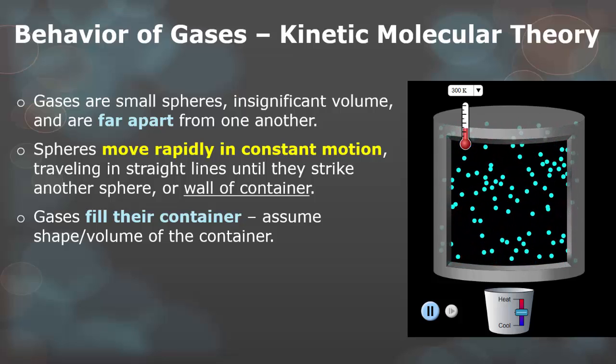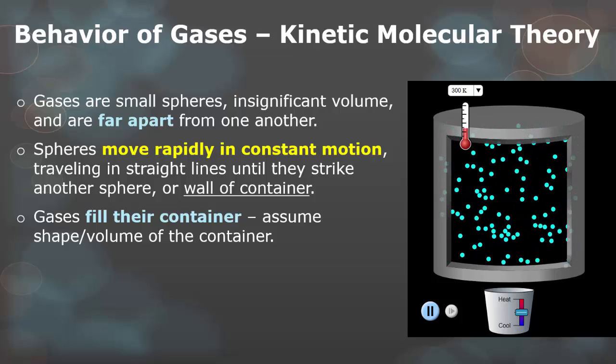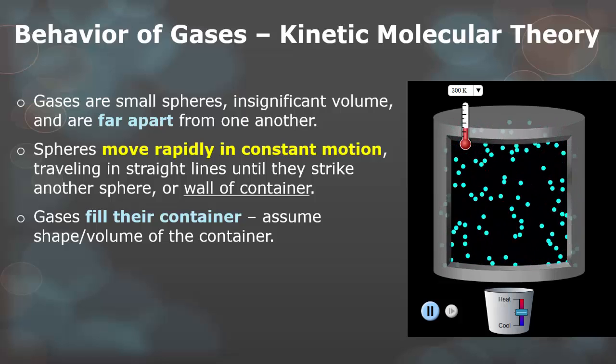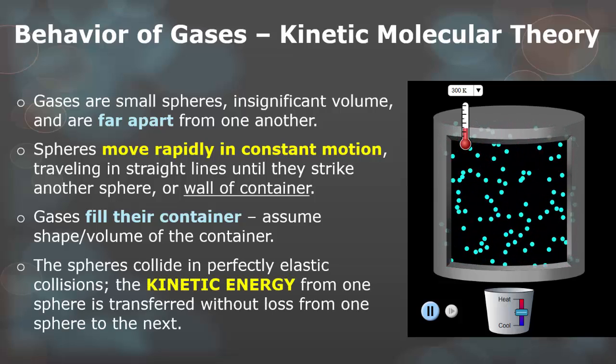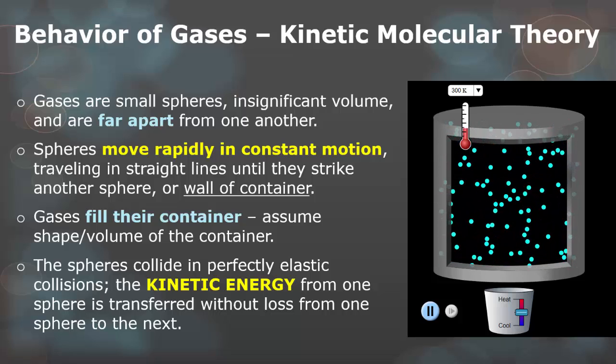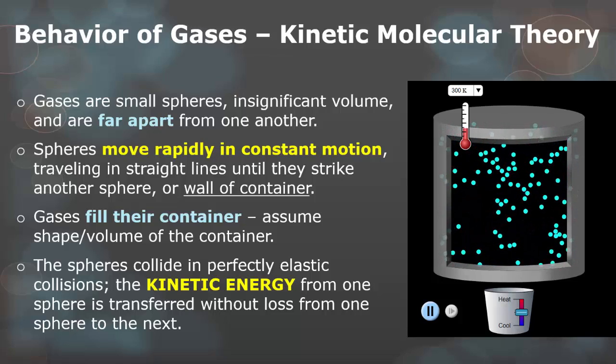Gases will fill their container. They always assume the shape and volume of the container. So if you notice different types of balloons or different types of balls, they're all different shapes and sizes, it's because the gases are completely filling them. And the spheres collide in perfect elastic collisions, which means that the kinetic energy, or the energy of motion, from one gas is transferred without loss from one gas to the next.